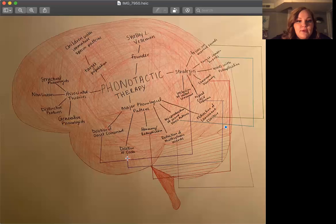Next we have the deletion of coda. If you follow this line, the suggested strategy is to repeat CV-CV sequences, gradually working up to the removal of the second vowel.